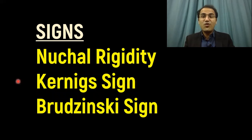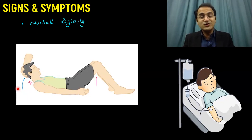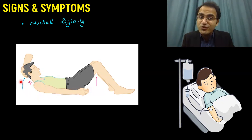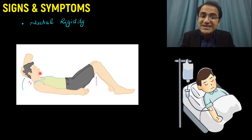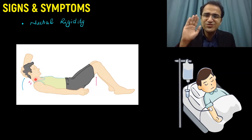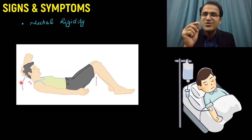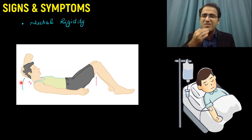Coming to the signs of meningitis, we have three classical signs: nuchal rigidity, Kernig's sign, and Brudzinski's sign. Nuchal rigidity is very common in meningitis. You check it by laying the patient in the supine position and slowly flexing the patient's neck so that their chin touches their sternum. In a patient with meningitis, the neck will be so rigid you won't be able to go halfway.